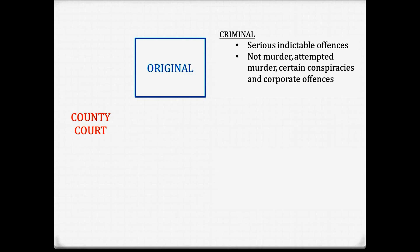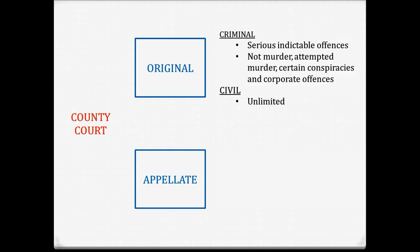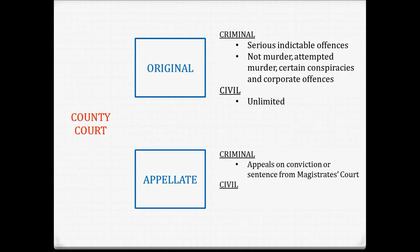The County Court's original jurisdiction for criminal cases: it hears serious indictable offences but doesn't hear murder, attempted murder, certain conspiracies and corporate offences — those cases get heard in the Supreme Court Trial Division. In civil cases, it can hear claims of an unlimited amount, generally focusing on personal injury claims. Its appellate jurisdiction in criminal cases: it can hear appeals on the conviction or the sentence from the Magistrates Court, operating as a de novo appeal, so the case is heard as if for the first time. In civil cases, there's no actual appellate jurisdiction unless it's specified in an act that you can appeal to the County Court.